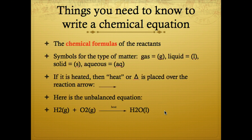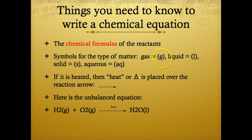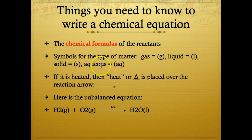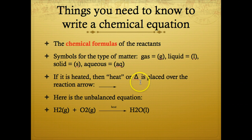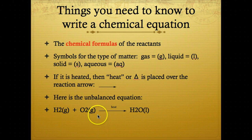Things you need to know to write a chemical reaction: the chemical formulas of the reactants, and the symbols for the type of matter — (g) for gas, (l) for liquid, (s) for solid, (aq) for aqueous. If the reaction is heated, we write 'heat' or place a triangle symbol over the reaction arrow. Here's an unbalanced equation: H₂ + O₂ → H₂O is not balanced because we have two oxygens on the left and only one oxygen on the right.